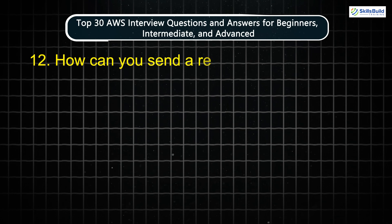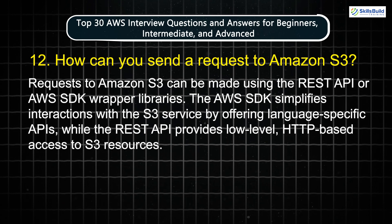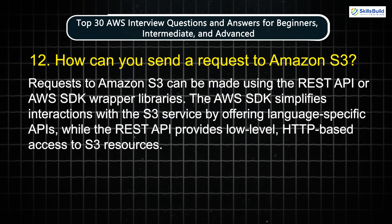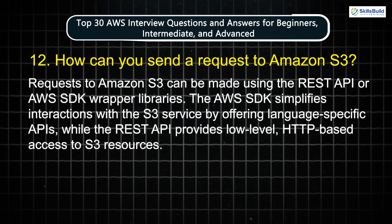Question 12: How can you send a request to Amazon S3? Requests to Amazon S3 can be made using the REST API or AWS SDK wrapper libraries. The AWS SDK simplifies interactions with the S3 service by offering language-specific APIs, while the REST API provides low-level HTTP-based access to S3 resources.